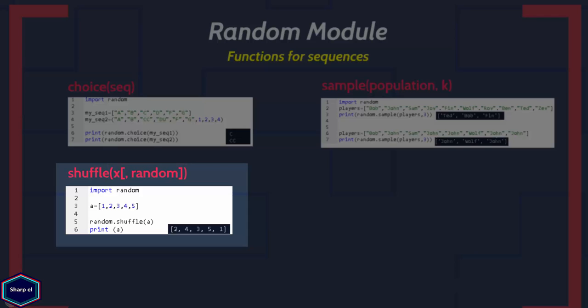In my example, the shuffle() function takes the list a as its argument. When I print list a, you can see the elements of list a are in random order.